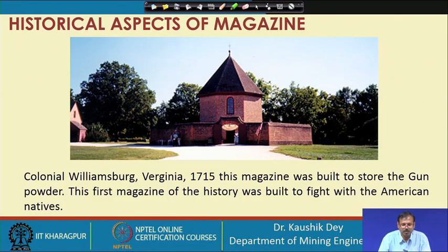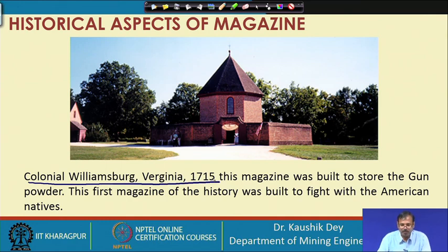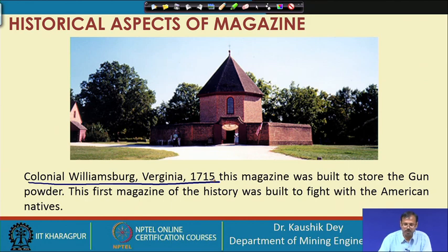Let us see the historical aspect of the magazine. This is the first magazine built in colonial Williamsburg, Virginia, in 1715 — the world's first magazine. It was basically built to store arms and explosives to fight with the natives of the Americas. Europeans kept their arms and ammunition in this building, and it was heavily guarded so that they could fight with the native Americans.